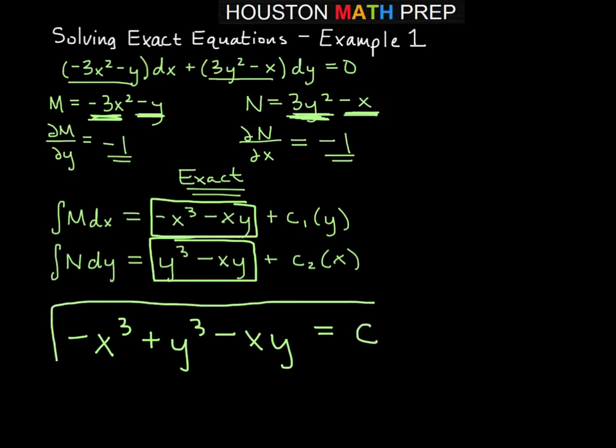And since we have multiple y terms here, I think we'll probably leave this and not solve this directly for y. So there's our solution. Negative x cubed plus y cubed minus xy equals c. Answer to our exact equation.